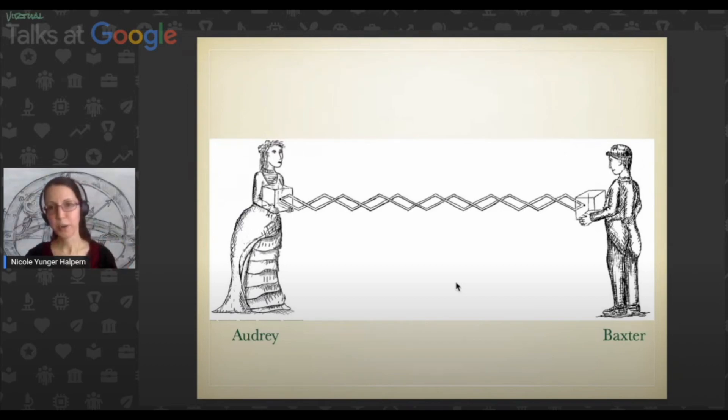Remember, if Audrey's particle is entangled with Baxter's as strongly as possible, and then Audrey measures her particle, she has no idea whether she'll obtain a 1 or a 0.